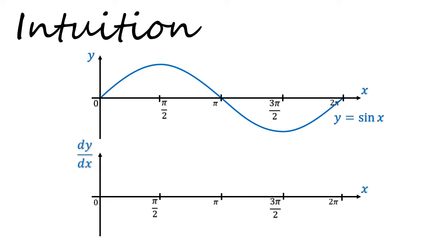Now observe that at where x is 0, the gradient begins at its maximum. So the function for the gradient function, the dy/dx function, also needs to start from a maximum point. At π/2, the sine graph has plateaued to a maximum point, so the gradient is 0.